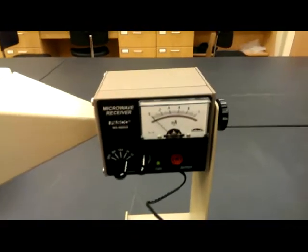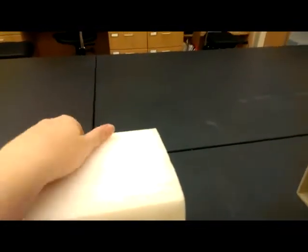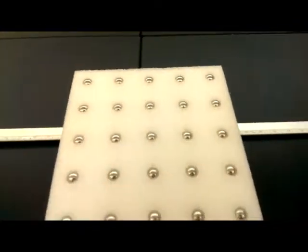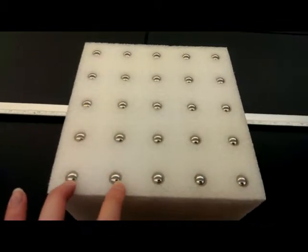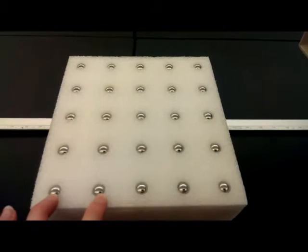The main part of the Bragg scattering is to use this cube, which is in fact layers of styrofoam with metal spheres. Now, the interesting aspect of this is what the spacing is between the metal spheres. You can use something like a ruler to measure that.